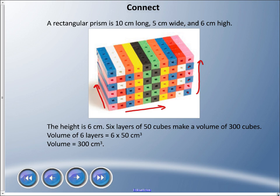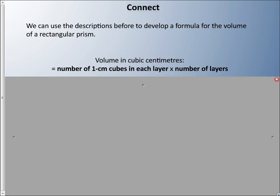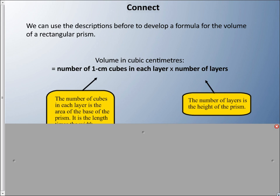We can use these descriptions before to develop a formula for the volume of a rectangular prism. In order to get volume in cubic centimeters, we have the number of one-centimeter cubes in each layer and we're going to multiply that by the number of layers. So we had those 50 cubes as one layer, we had 6 layers altogether. That's what we were doing.